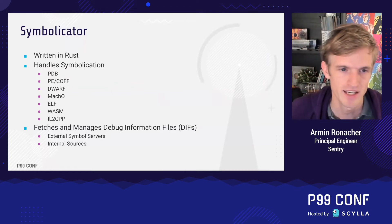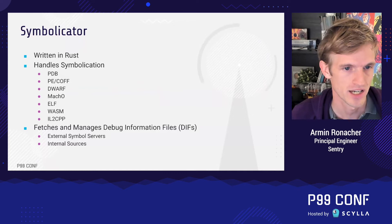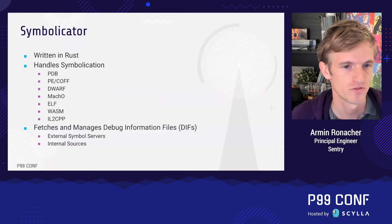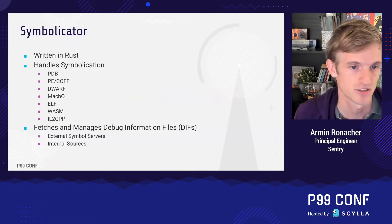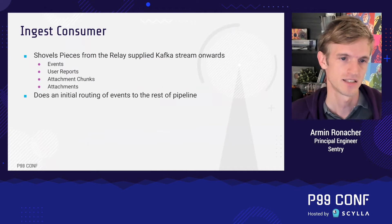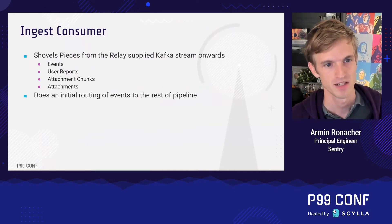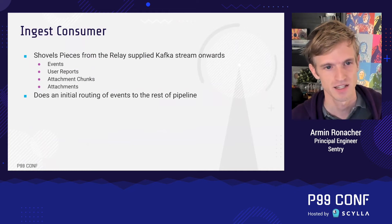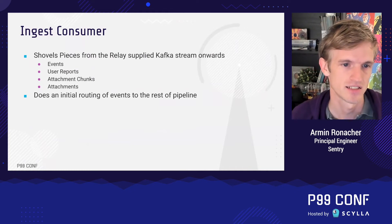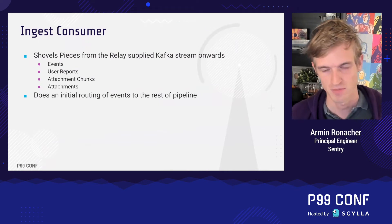What's interesting about Symbolicator is that processing a crash report can take a really long time because it needs to talk to external services to fetch debug data, and some of those external services can be really, really slow. The ingest consumer is one of many consumers we have where we shovel data from one part — we like Kafka a lot — to another part, in our case RabbitMQ. This is one of many consumers that travels data from one place to another.